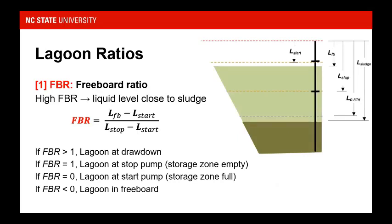To compare 27 lagoons with all their different dimensions and designs, we needed to normalize the data using two ratios. The first is our freeboard ratio, trying to figure out where in relation to our start and stop pumps our lagoon level falls. Measurements are taken from the top of the lagoon berm. Freeboard ratio is calculated as the distance between the freeboard and the start pump divided by the difference between the start and stop pump, or temporary storage zone. A high freeboard ratio indicates the liquid level is close to the sludge level — a lower lagoon level.